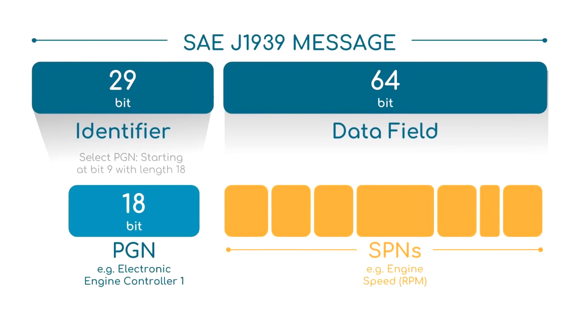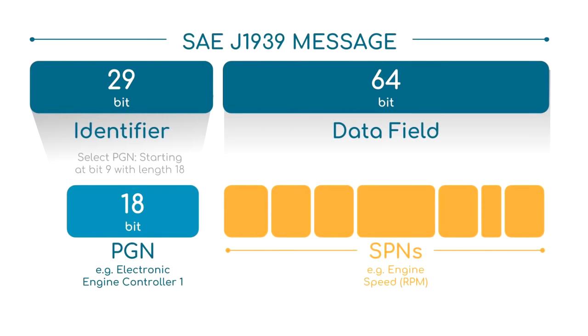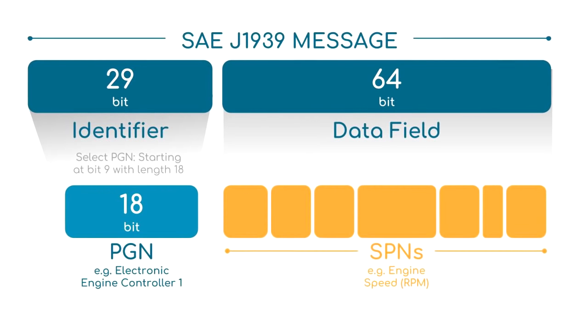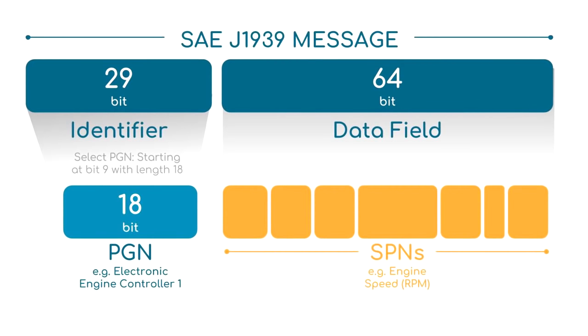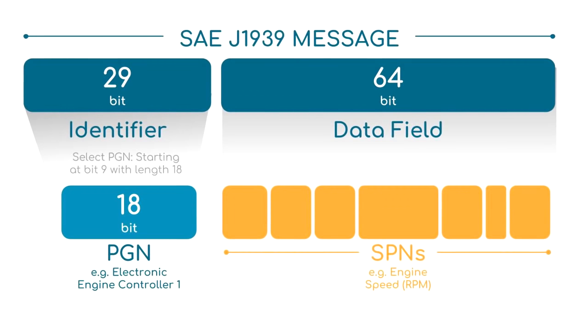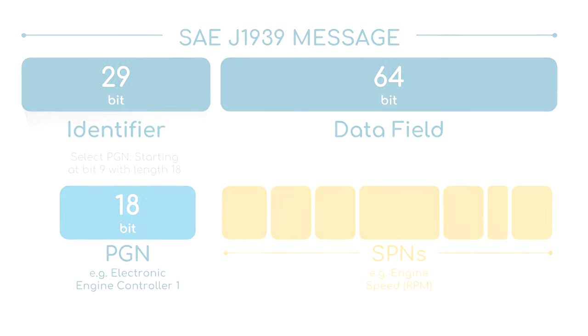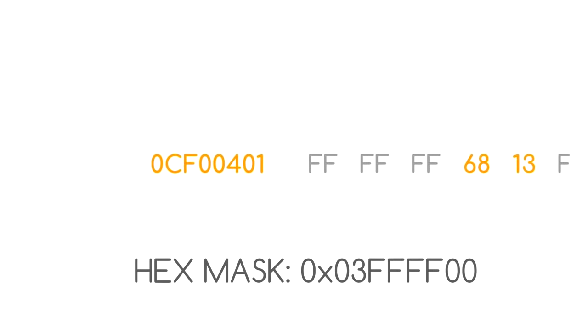A word of caution: you cannot match PGNs versus the full 29-bit CAN identifier. Instead, you need to separate out the 18-bit PGN. Tip: if in doubt, use our online J1939 PGN converter to parse a full 29-bit J1939 message ID and get the PGN in decimal form. Example: let's assume we log a J1939 message with the extended identifier 0x0CF00401. To get the PGN, we carve out the ID starting at bit 9 with length 18 (indexed from 1), or apply the hex mask 0x03FFFF00, which leads to the same result. The outcome is PGN 0x0F004, or in decimal form, 61444.